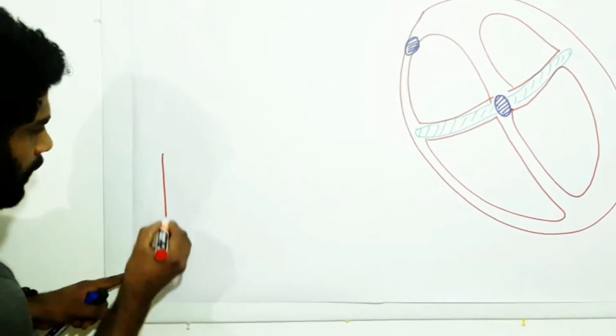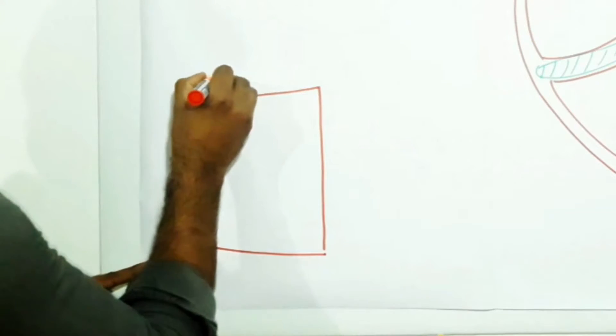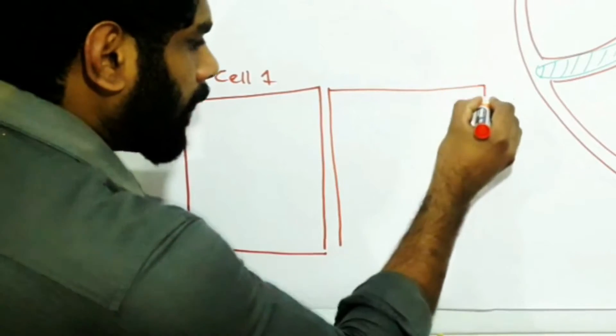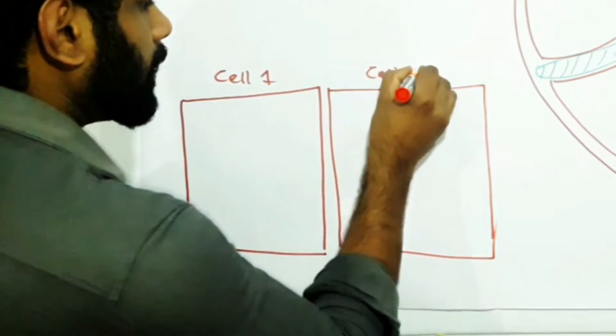Here we have myocardial cells. This is cell 1 and here we have another myocardial cell, this is cell 2.